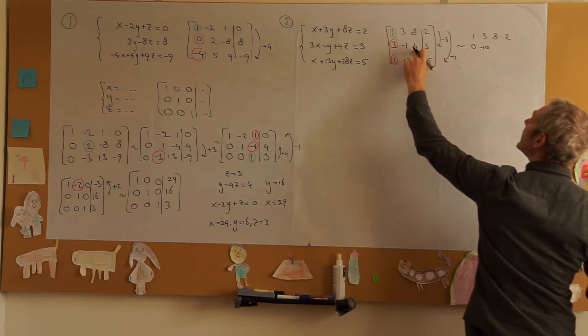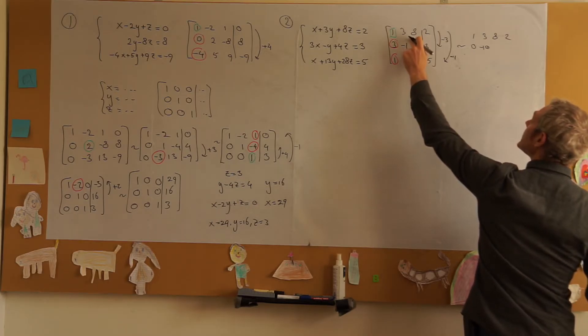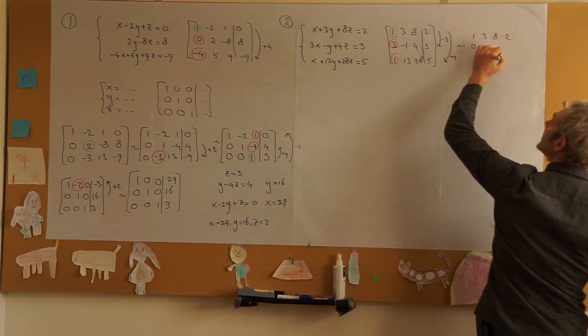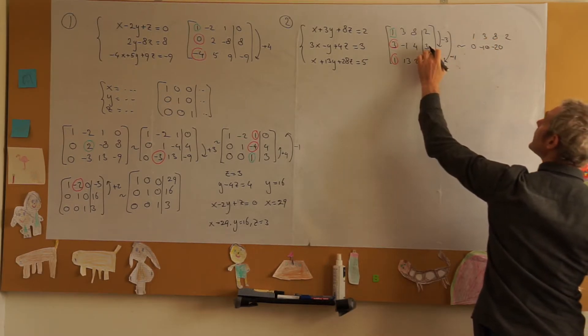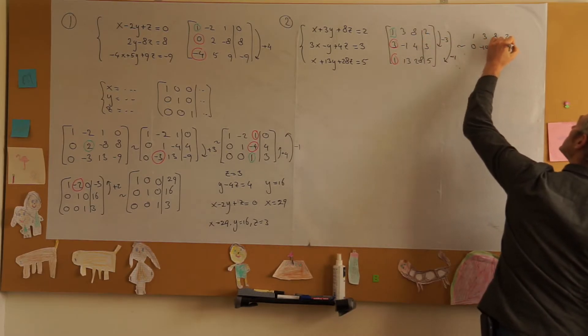4 minus 24 is minus 20 and 3 minus 6 is equal to minus 3.